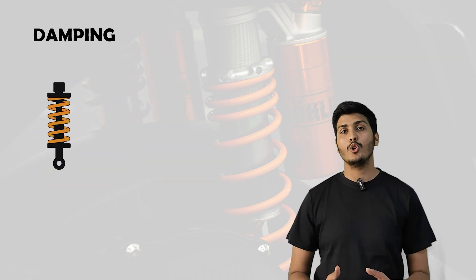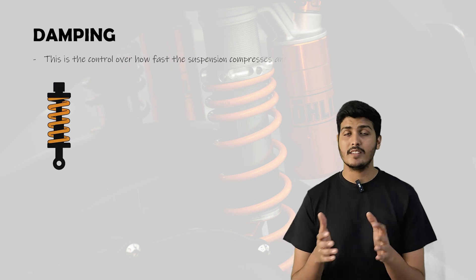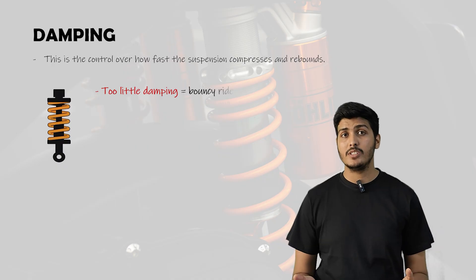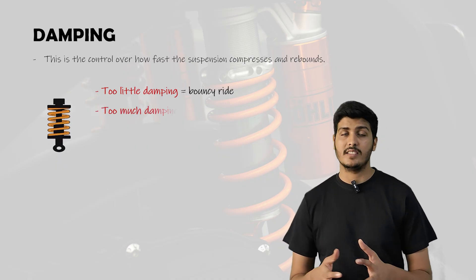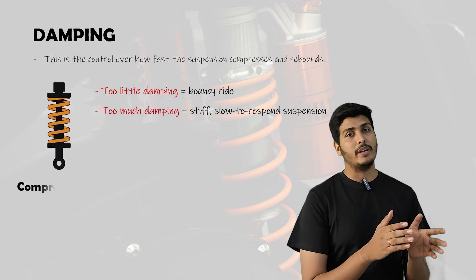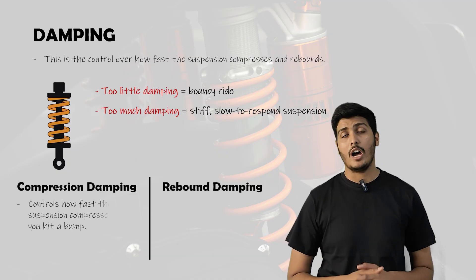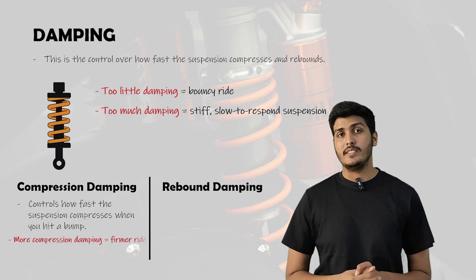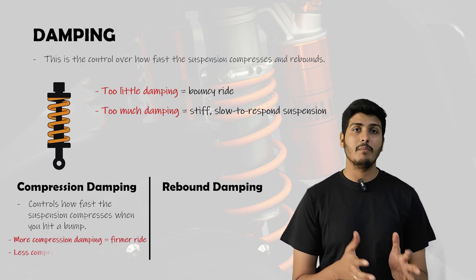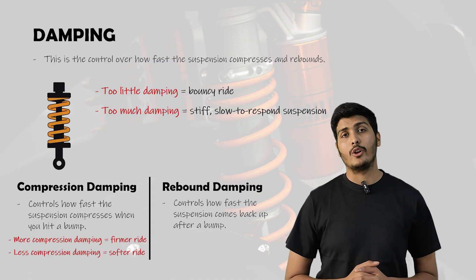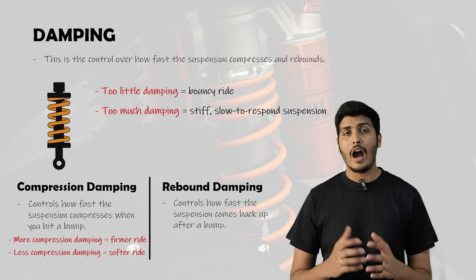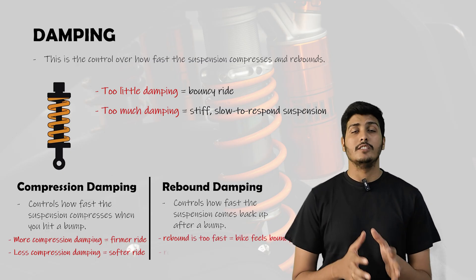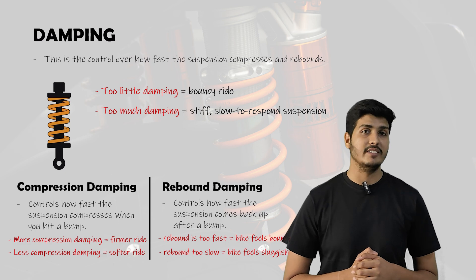Number three is damping — the control over how fast the suspension compresses and rebounds, done by the damper using oil and gas. Too little damping makes for a bouncy ride; too much damping makes for a stiffer ride. Within damping we have compression damping and rebound damping. Compression damping controls how fast the suspension compresses when you hit a bump: more compression damping gives a firmer ride, less gives a softer ride. Rebound damping controls how fast the suspension comes back after hitting the bump. If rebound is too fast the bike will feel bouncy; if it's too slow the bike will feel sluggish.